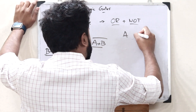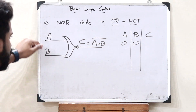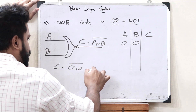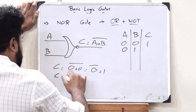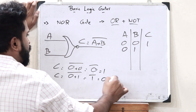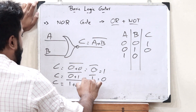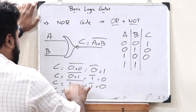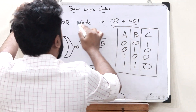Let us draw the truth table of the NOR gate with inputs A and B and output C. When both inputs are 0: C is equal to (0 plus 0) complement — 0 plus 0 is 0, and 0 complement is 1. When A is 0 and B is 1: C is equal to (0 plus 1) complement — 0 plus 1 is 1, and 1 complement is 0. When A is 1 and B is 0: C is equal to (1 plus 0) complement, which is 1 complement, which is 0. Finally, when both inputs are 1: C is equal to (1 plus 1) complement, which is 1 complement, which is 0. This is the truth table of the NOR gate.